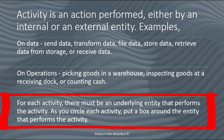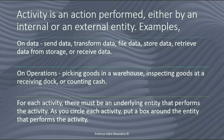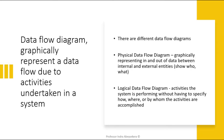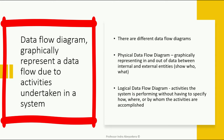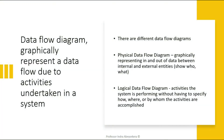As we circle each activity, we put a box around the entity that performs the activity. A data flow diagram graphically represents a data flow due to activities undertaken in a system. There are different data flow diagrams — the two main types are physical data flow diagram and logical data flow diagram.